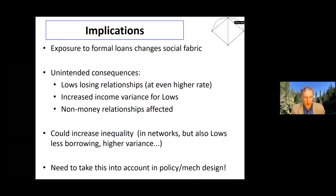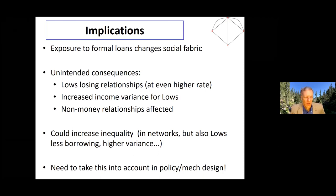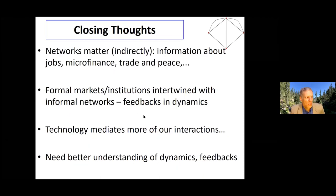It's not to say that offering loans and getting credit into villages is a bad thing. It's just that in complex systems, you start changing one part of a society and it's going to have wide-ranging implications. What we're seeing is not just small second-order effects — these are large effects. You change part of what's going on in the market and you end up with a fairly large impact on social structure. These networks matter, they affect the formal markets, and formal markets and institutions are intertwined with these informal networks, producing feedback and dynamics.